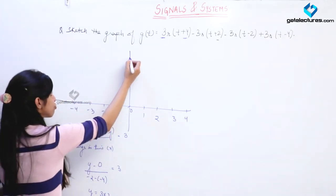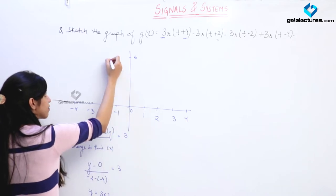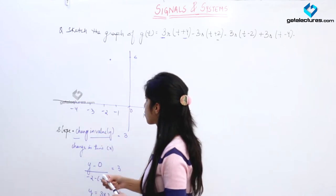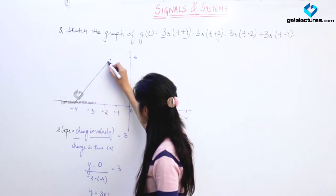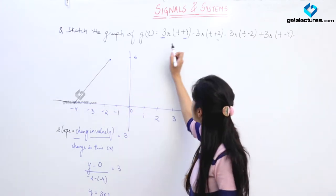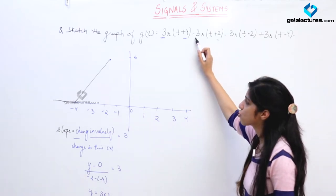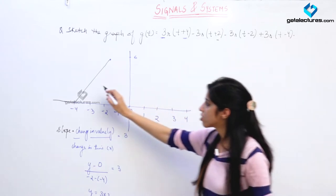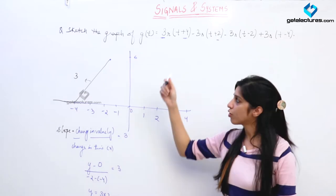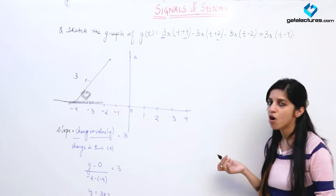I need to draw a line with value 6 at T equal to minus 2 and initially value 0 at T equal to minus 4. This is the required line — it goes to 6 at minus 2. Now from minus 2, the slope drops; the change in slope is minus 3. The slope of this line was 3, and now we require a change of minus 3, which means we need a line of slope 0.